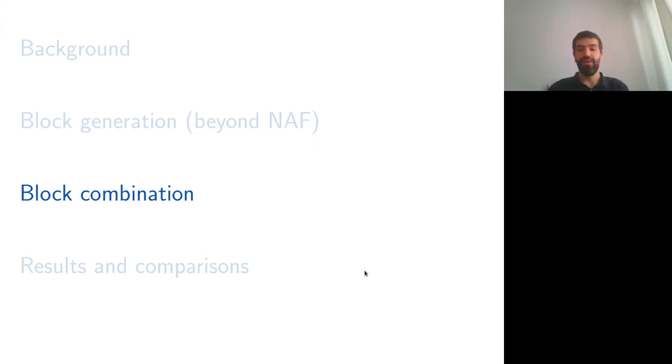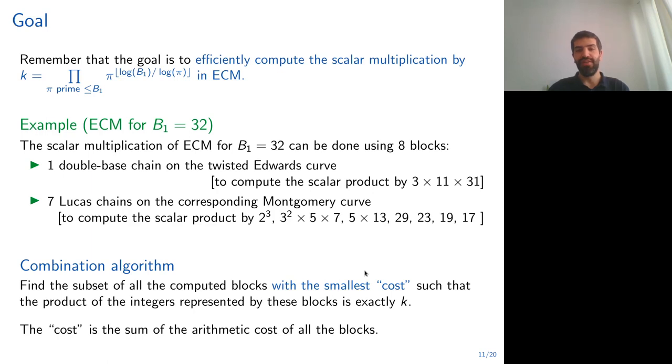For the rest of the talk and the block combination and the result, I will give the screen to Cyril that will finish the presentation. Thank you. We are now going to see how to use the blocks that we just generated to compute the scalar multiplication in ECM. For small values of B1, like in the example B1 equals 32, it's quite easy to find a way to use them. The goal here is to find given a B1 value, the subset of all the generated blocks with the smallest cost such that the product of the integers represented by those blocks is exactly k.